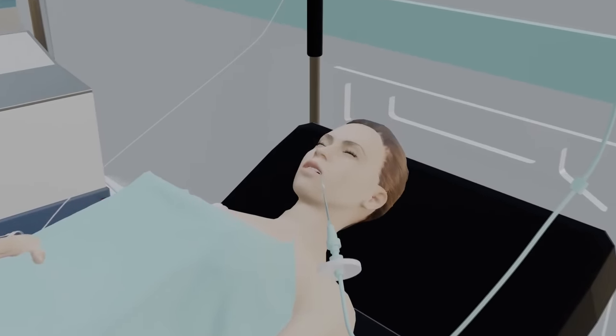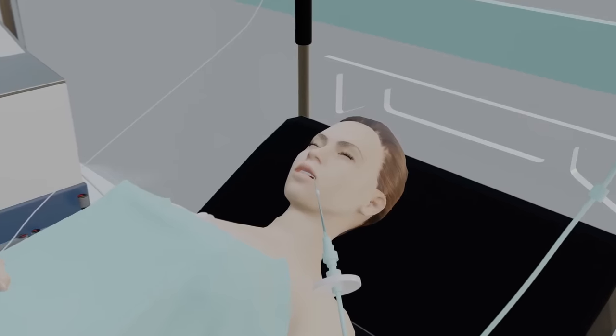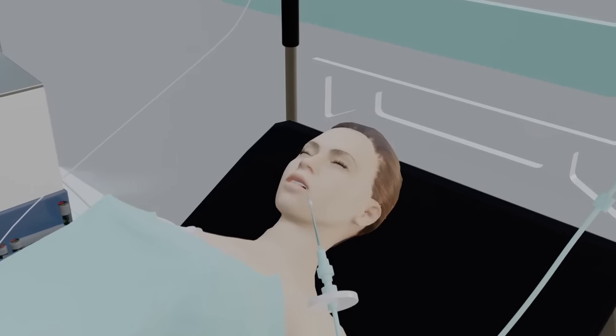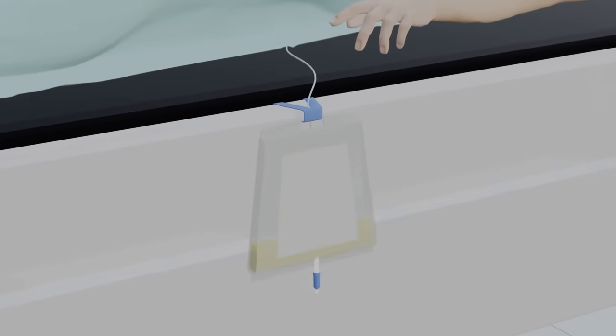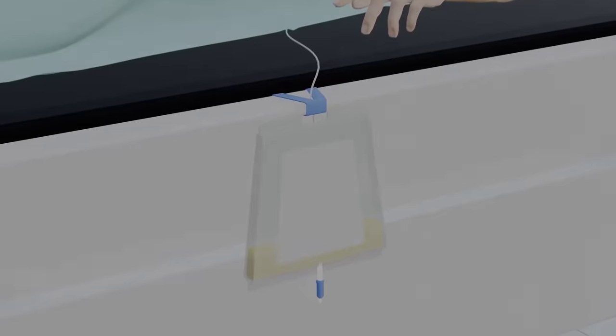A breathing tube will be inserted through your mouth and throat to help you breathe during the procedure. A catheter will be placed in your bladder to drain urine.